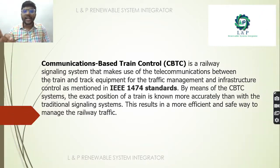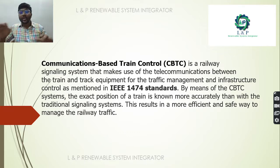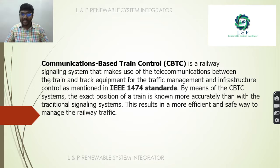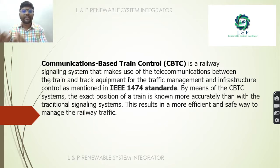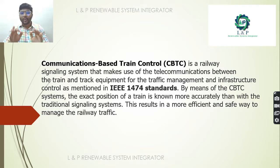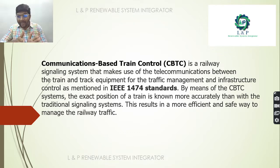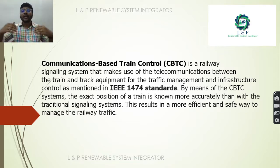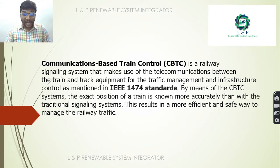What is CBTC — Communication Based Train Control? It is a railway signaling system that makes use of telecommunication between the train and the track equipment for traffic management and infrastructure control. It follows the IEEE 1474 standards. With this method we can know the exact position of the train, and unlike the traditional signaling system, we can make maximum efficient use of it for handling railway traffic.